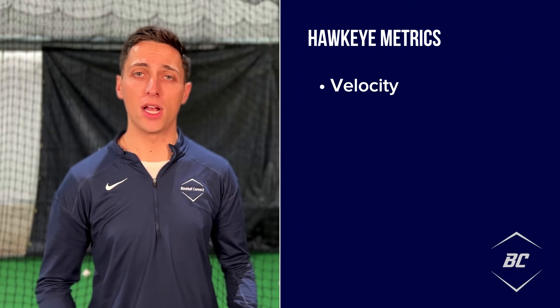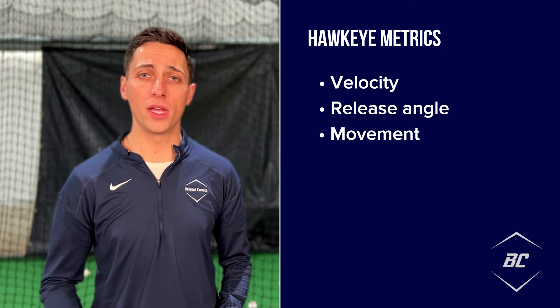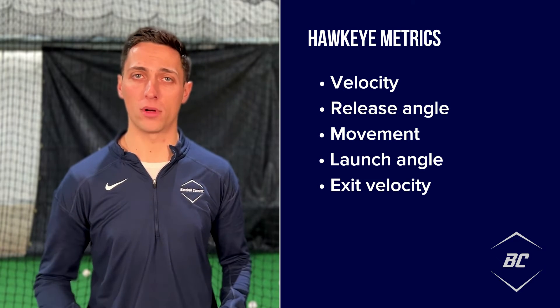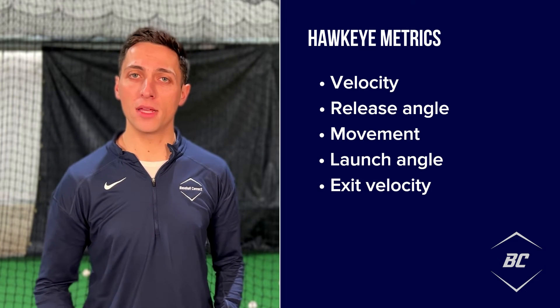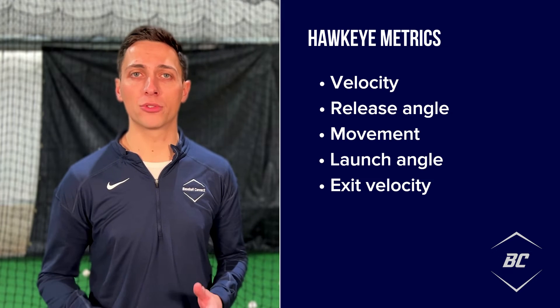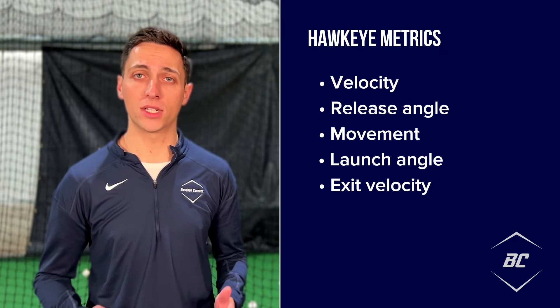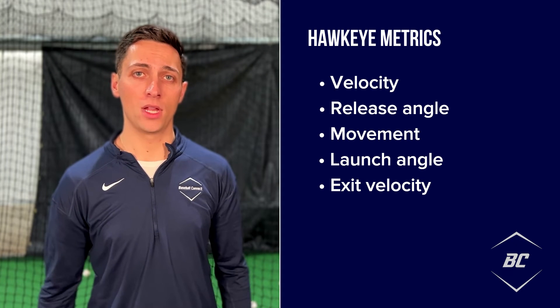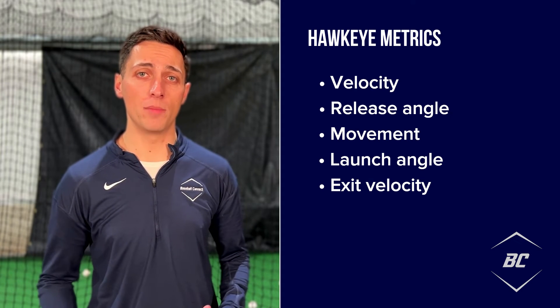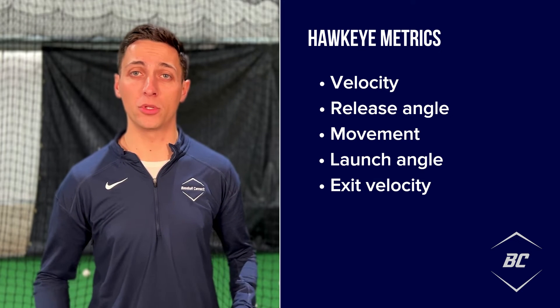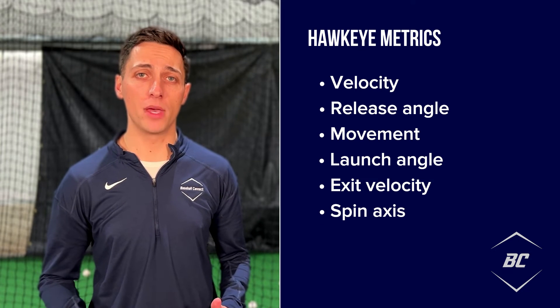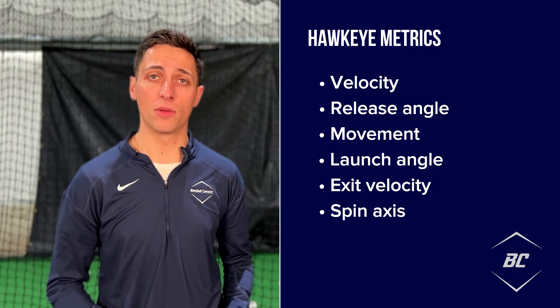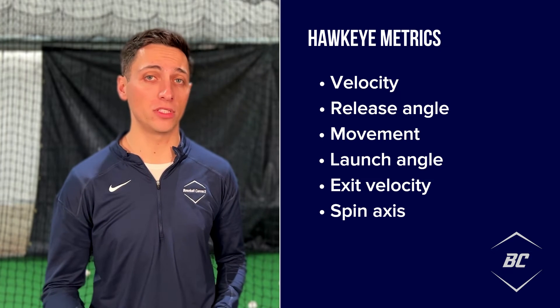Like TrackMan before it, Hawkeye can measure movement metrics of pitches and batted balls like velocity, release angles, movement, launch angle, exit velocity, and much more. However, Hawkeye can measure these variables with much greater accuracy than TrackMan because of the constant stream of high-resolution video being captured from the cameras. Hawkeye can also collect data on metrics that were previously unmeasurable with TrackMan. Spin axis can now be directly measured instead of having to be estimated from the observed flight of the ball like previous tech had done.